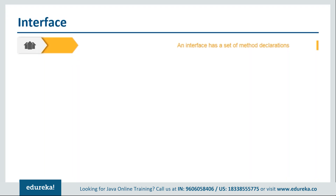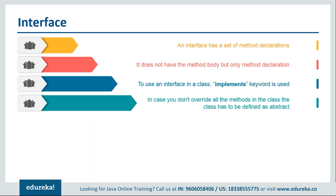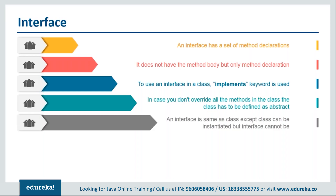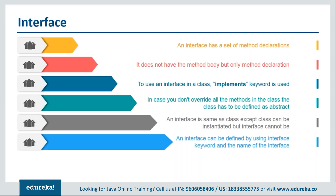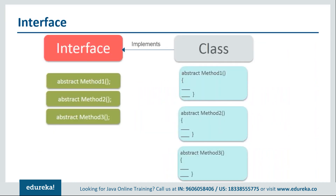An interface is nothing but a set of abstract method declarations — it does not need a method body, only method declarations. To use an interface in a class we use the keyword 'implements'. If you don't override all the methods in the class, the class has to be defined as abstract. An interface is similar to a class except that it cannot be instantiated. An interface is defined using the 'interface' keyword followed by its name, for example 'interface Shape'. Your class then implements the interface and uses those abstract methods with its own definitions.